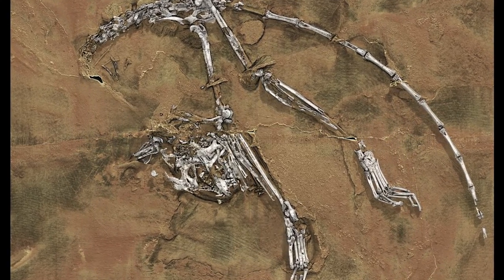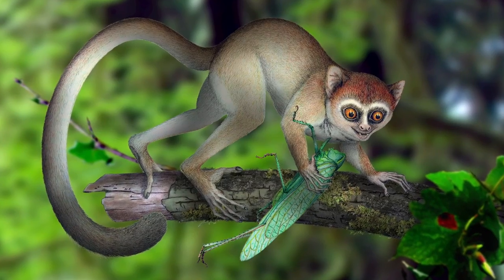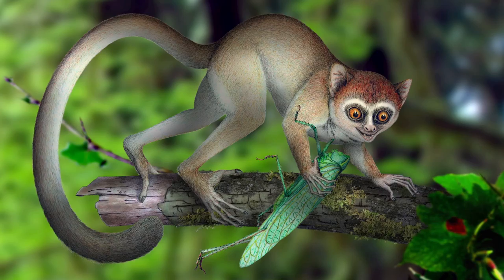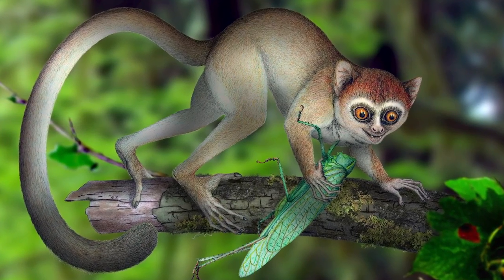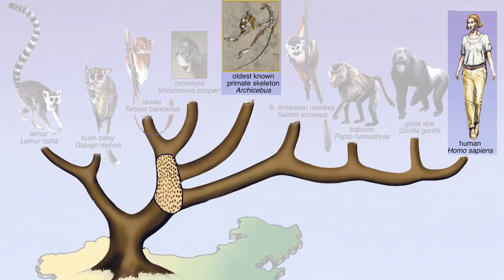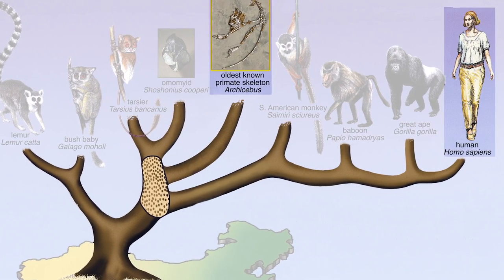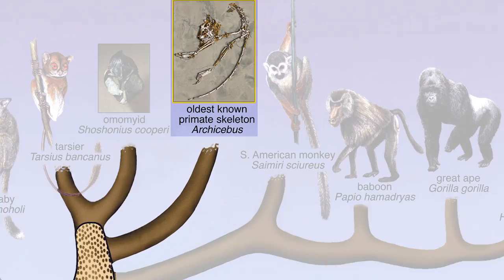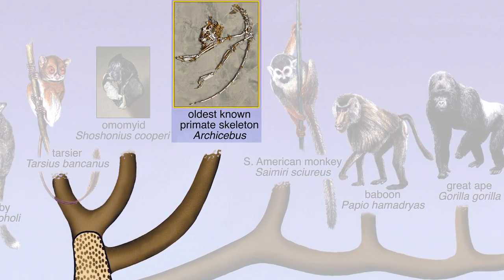A study we published recently on Archicebus achilles — a very small primate published in Nature — concerns the smallest primate we know so far: only 7 centimeters in body length with a 13-centimeter tail. This fossil is not the oldest primate, but it is by far the oldest primate skeleton. It is very close to the base of our group but sits on the side of the group called the Tarsiiformes.